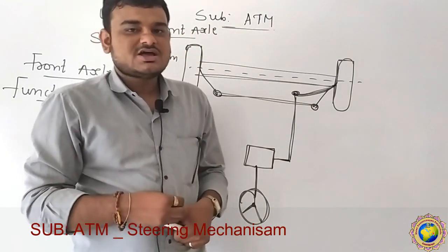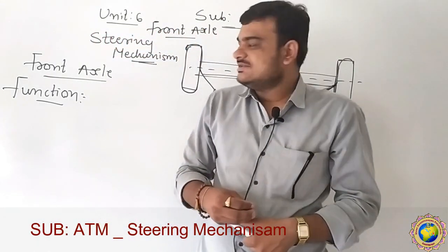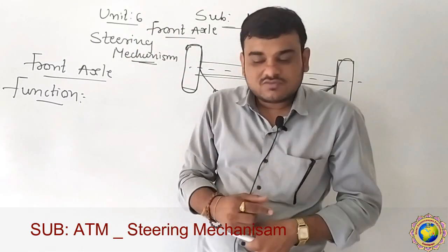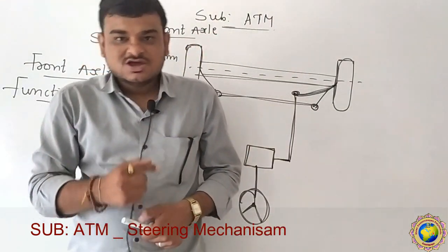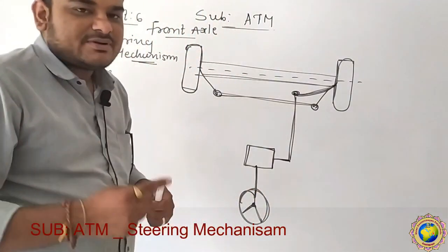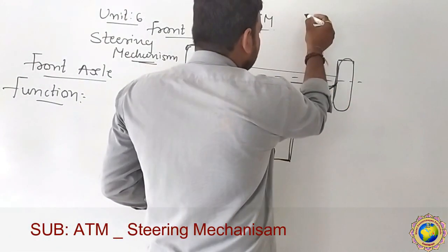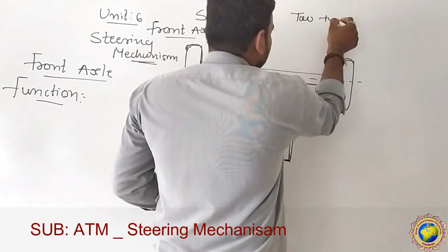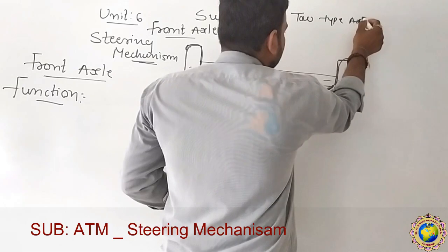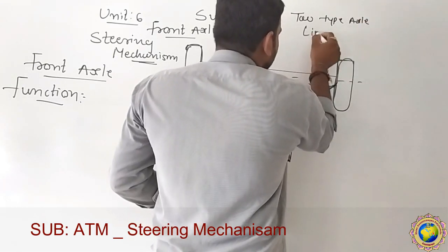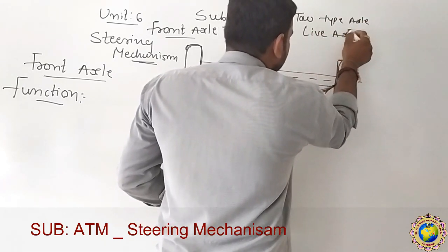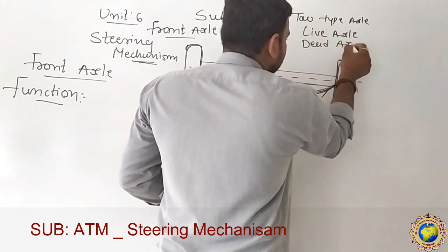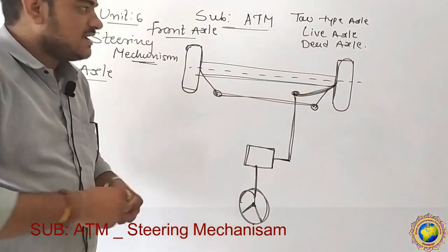Today in Unit Number 6 we will study the front axle. So first let us recall what we have already studied — there are two types of axles: live axle and dead axle. We have already discussed the rear axle.